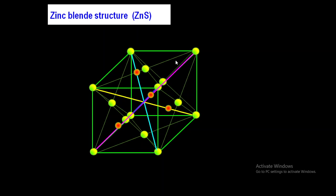This is the complete zinc blende structure. In brief: eight sulfur ions are present at the corners, six are placed at the center of each face, and four Zn²⁺ ions are placed inside the unit cell along the diagonals. This is the complete cubic structure of ZnS, also known as zinc blende structure. The yellow spheres are sulfur ions and the red spheres are Zn²⁺ ions.